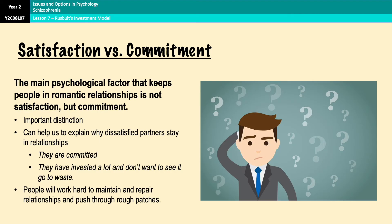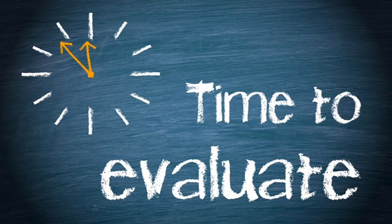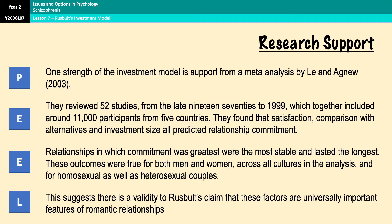The first evaluation point is a strength: research support provided by Lee and Agnew from 2003. It was a meta-analysis reviewing 52 studies that together included around 11,000 participants from five different countries. They found that satisfaction, comparison with alternatives, and investment size all predicted relationship commitment. Relationships in which commitment was greatest were the most stable and lasted the longest, and these outcomes were true for both men and women across all cultures, as well as for homosexual and heterosexual couples, suggesting universal validity of Rusbult's claims.